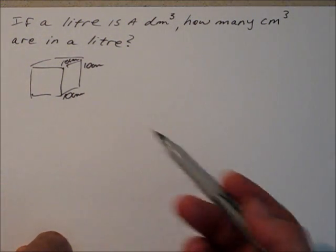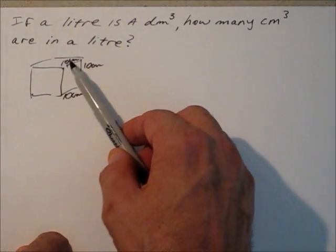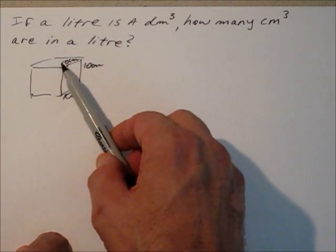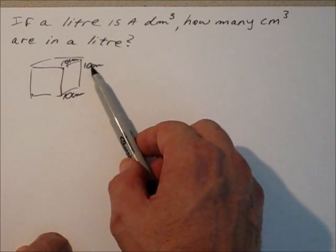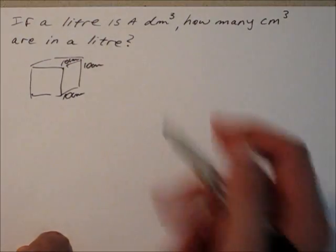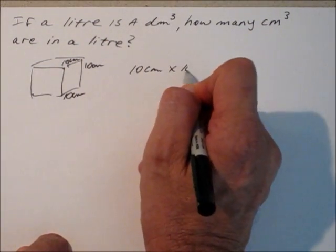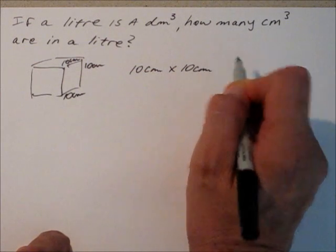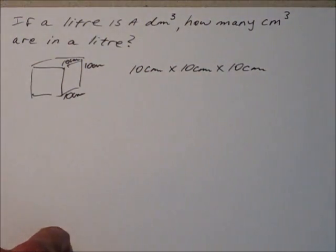So to work out the number of cubic centimeters, what you're doing is multiplying the three sides together. So it's actually ten centimeters by ten centimeters by ten centimeters. So I'm going to write that down here. Ten centimeters multiplied by ten centimeters multiplied by ten centimeters.